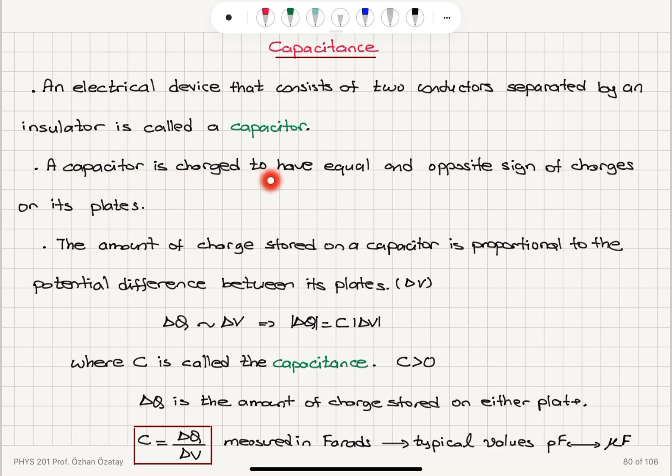A capacitor is charged to have equal and opposite sign of charges on its plates. If you have one electrode here, another electrode here, this is positively charged, this is negatively charged. They will be equal amounts of charge with opposite signs. One positive, one negative, and equal amounts of charge.